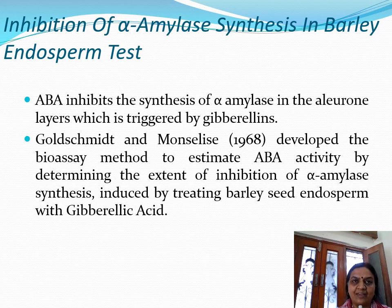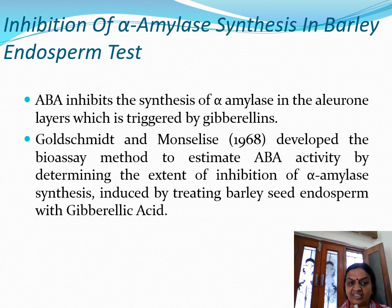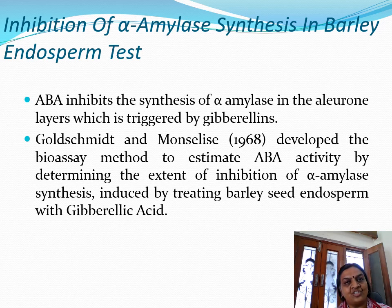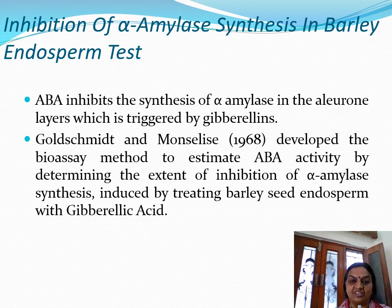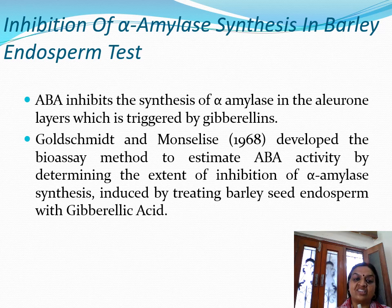The second bioassay for abscisic acid is the inhibition of alpha-amylase synthesis in barley endosperm test. Abscisic acid is an antagonistic hormone — it prevents the activity of gibberellic acid. This ABA inhibits the synthesis of alpha-amylase in the aleurone layer, which is triggered by gibberellins. This bioassay was developed to estimate ABA activity by determining the extent of inhibition of alpha-amylase synthesis induced by treating barley seed endosperm with gibberellic acid.